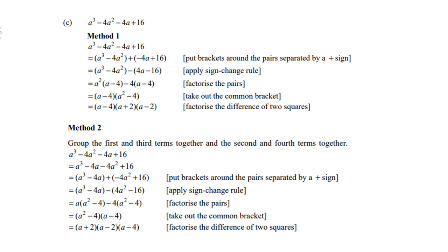There is a second method for this one. You group the first and the third term, second and the fourth one, and then you have a different set of groupings. Your first bracket will be a³ - 4a. For the second bracket, take out a negative to give you 4a² - 16. Then take out a as a common factor for the first bracket, 4 is a factor for the second bracket. Then you'll see they share a common bracket a² - 4, and the answer ends up the same like the previous method.